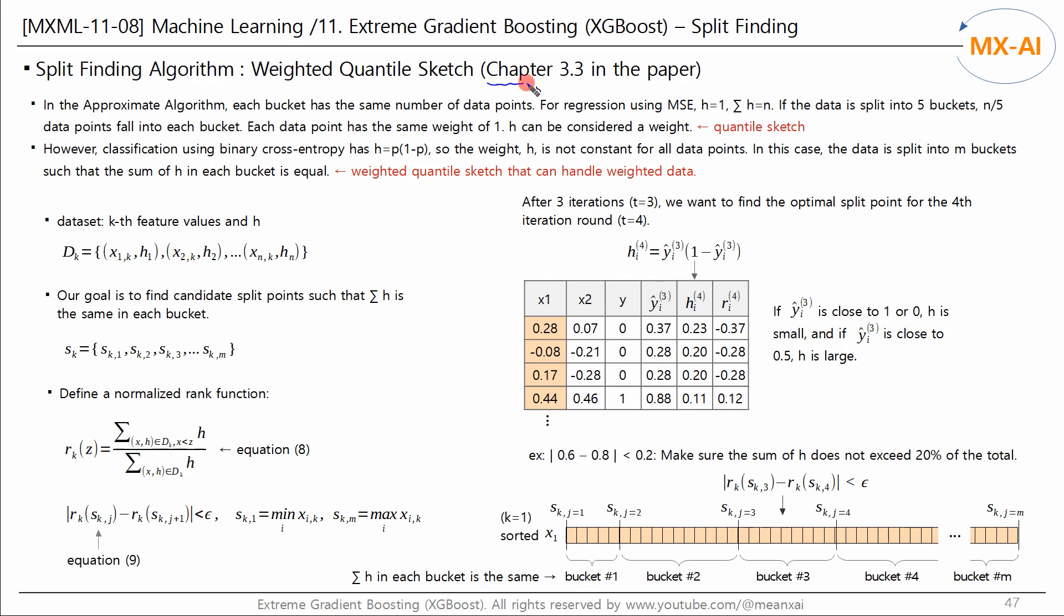Let's take a look at what's in section 3.3 of the paper. In the approximate algorithm we looked at in the last video, each bucket contained the same number of data points. For regression using mean squared error, h is 1 and the sum of h is the number of data points. If we split the data into five buckets, each bucket will contain n/5 of the data. All data points have a weight of 1.